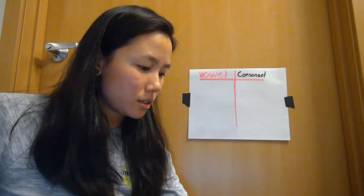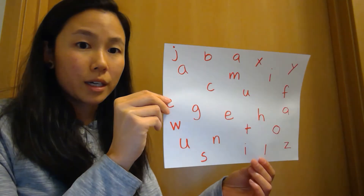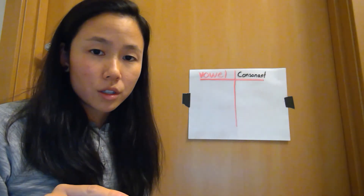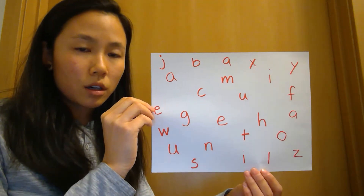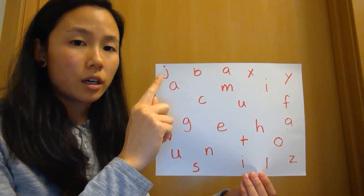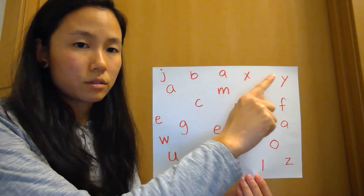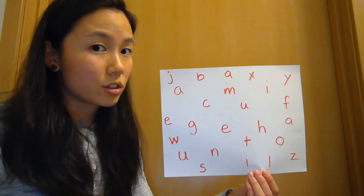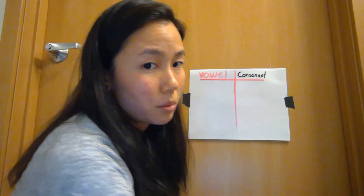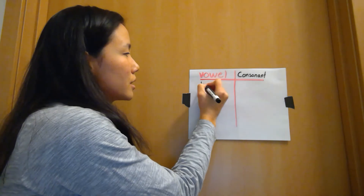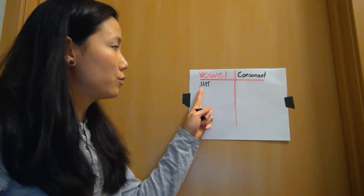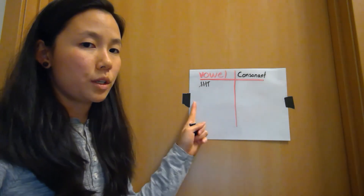The way this next activity works is I'm going to hold up a piece of paper with a whole bunch of letters on it. I want you to freeze the video, look at the letters, and count how many consonants or vowels you find. The easiest way to keep track is using our math skills with tally marks. We do four straight marks, and then the fifth one we cross down.